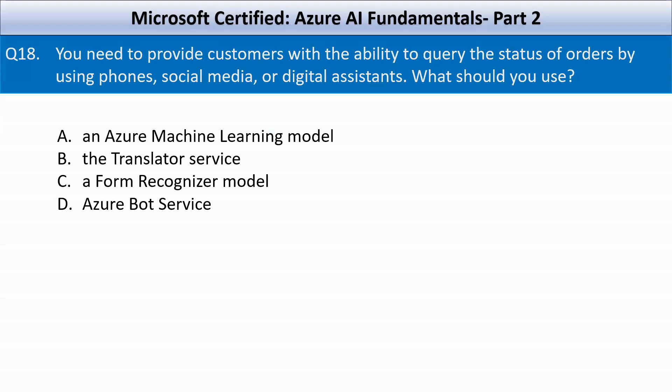You need to provide customers with the ability to query the status of orders by using phones, social media, or digital assistants. What should you use? Your options are an Azure Machine Learning model, the Translator service, a Form Recognizer model, or Azure Bot Service.